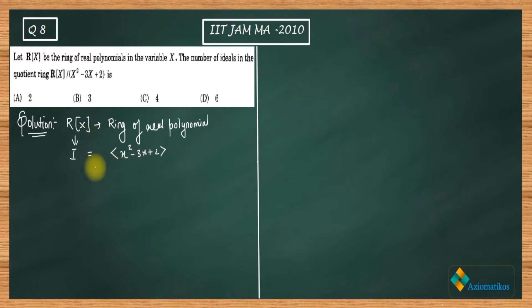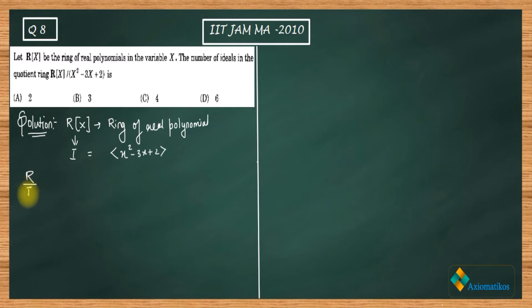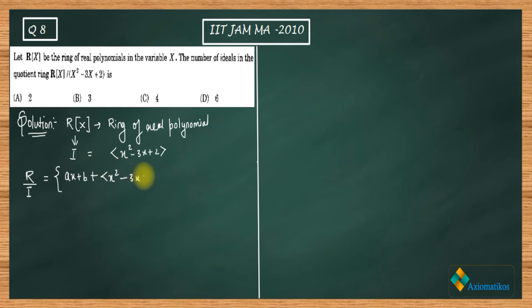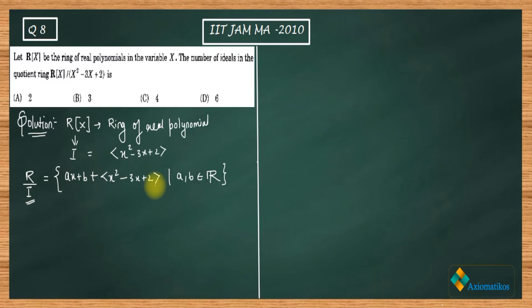I'm not going to explain the definitions of polynomials, ring of polynomials, or ideals here. The quotient ring R/I consists of polynomials of a certain form. If you have studied abstract algebra, you will have seen this type of quotient ring. We need to find out the ideals inside R/I.